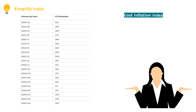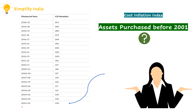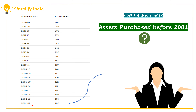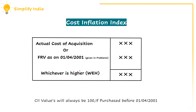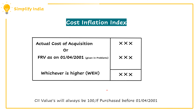You might wonder what we have to consider as the CII values for assets which have been purchased before 2001-02. In such a case, we have to consider both the actual cost of acquisition and the fair market value as on 1st April 2001. By comparing both of these, we have to consider whichever value is higher, and this value has to be used for calculation. The CII value will always be 100 if the asset was purchased before 1st April 2001.